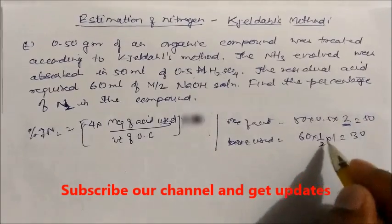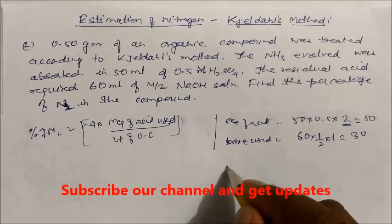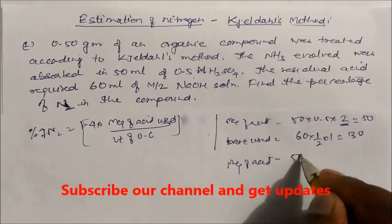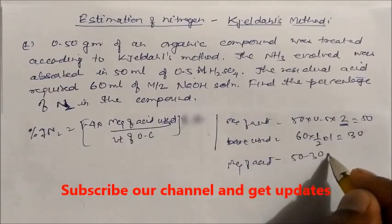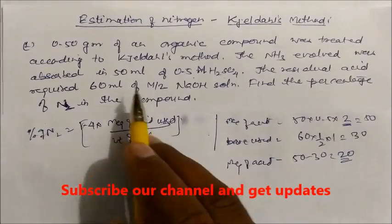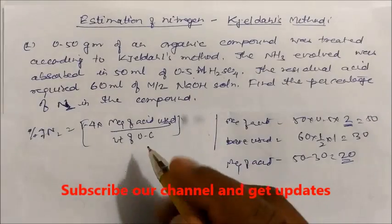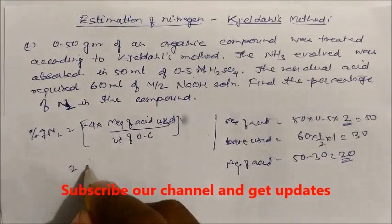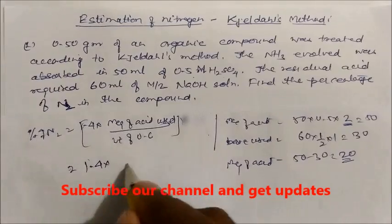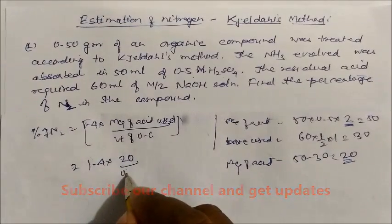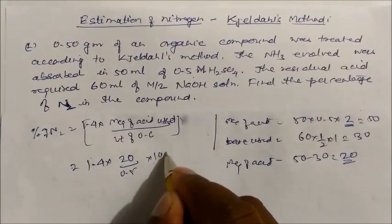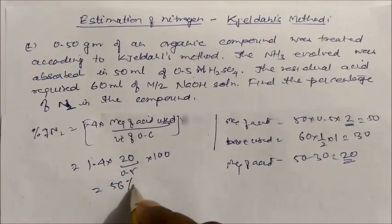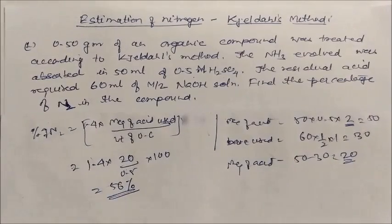Total acid milliequivalents = 50, and milliequivalents of acid used to neutralize ammonia = 50 − 30 = 20. Substituting: 1.4 × 20 ÷ 0.5 × 100. On solving, you get 56%. This is the answer for this question.